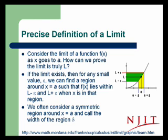Often we'll consider a symmetric region around x equals a and call the width of the region delta. That's just to make things more convenient. So if the region on one side is wider than on the other side, such that the y values are between L minus epsilon and L plus epsilon, we'll just choose the smaller of the two so that we can have a region from a minus delta to a plus delta.